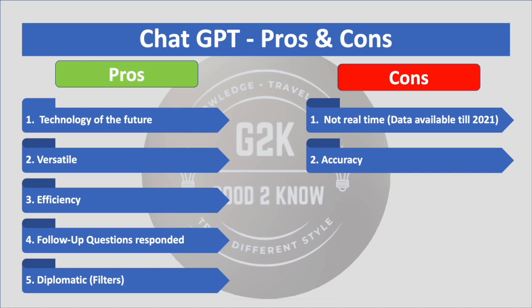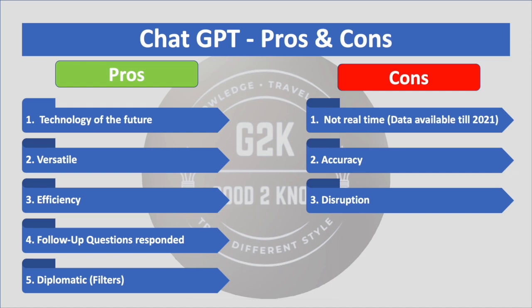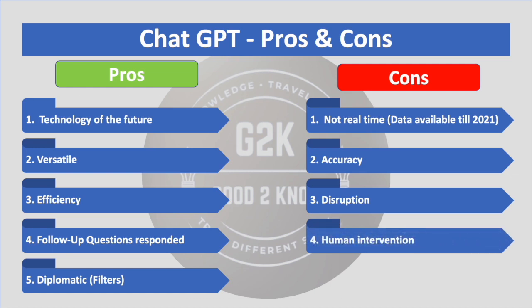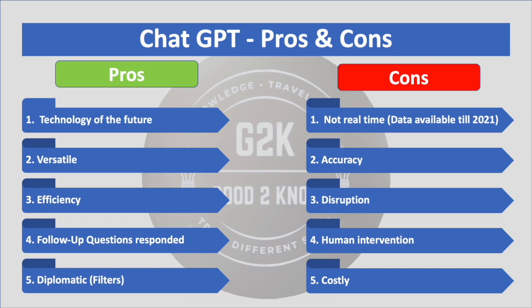The next con is accuracy. So far there hasn't been inaccurate information from ChatGPT, but nobody verifies the data accuracy — it is not guaranteed. That's one challenge. Then there's disruption: it's going to cause quite a lot of disruptions across sectors; people are going to lose jobs and companies will incorporate chatbots. Next is human intervention: despite being called machine learning, it is still human-dependent at this point in time and does not operate independently.